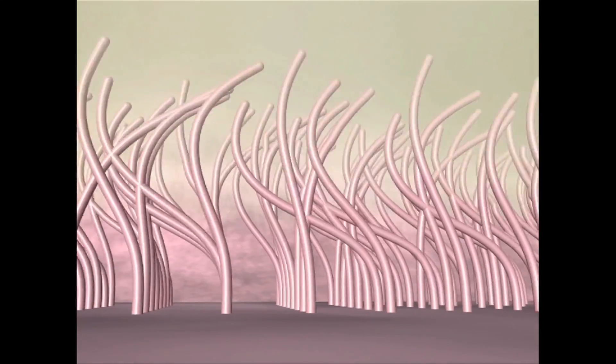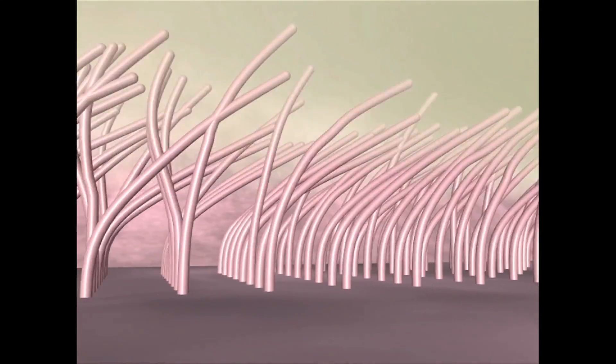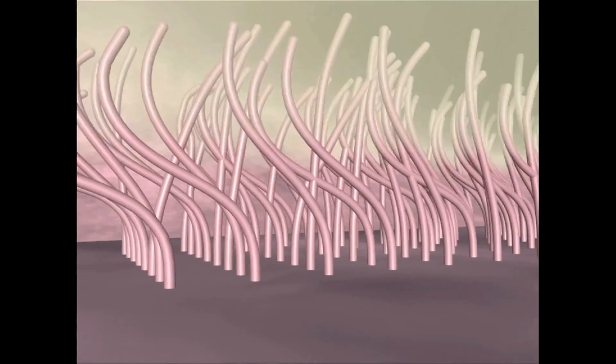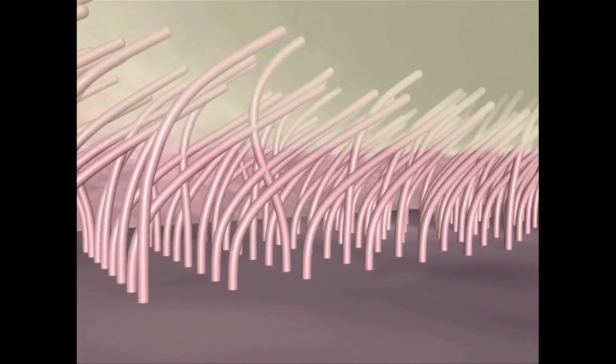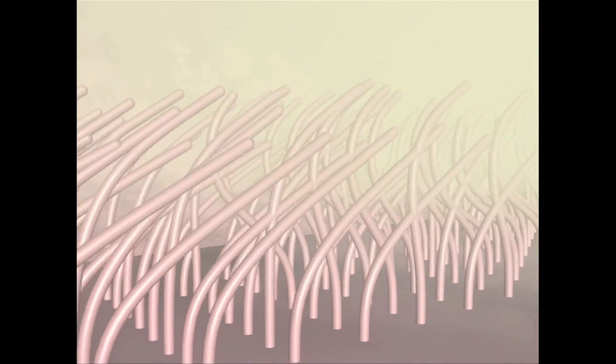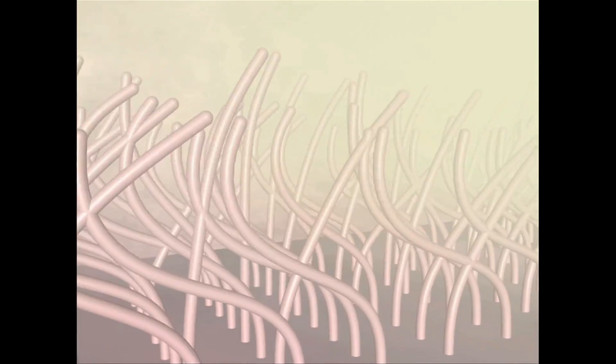We've seen how little we know about how one cilium beats. But what causes all the cilia to work together? Again, we don't know. It may just be easier for each of them to pulse together than to go against the team.